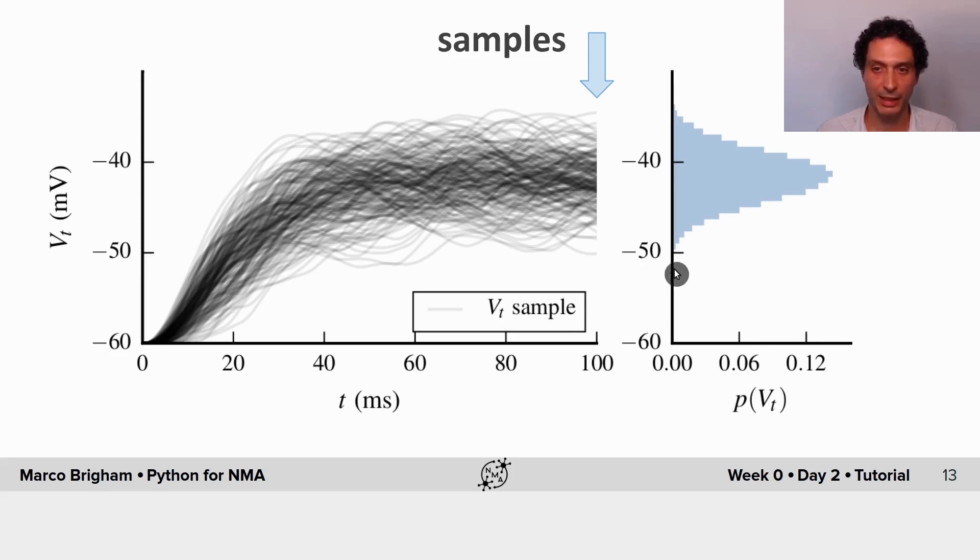So here this sample arrived at 100 milliseconds near minus 50 millivolts, so it will count, it will go into this bin and this bin gains one unit. Here in the middle we have many more samples of course and this is why the histogram is much higher near these values here in the middle.